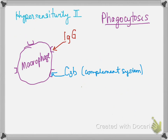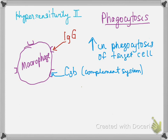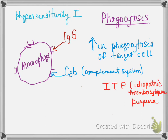With phagocytosis, macrophages have receptors on them, and both IgG and C3B are opsonins — meaning they enhance phagocytosis. IgG or C3B can bind to the receptor on the macrophage, thus enhancing phagocytosis of the target cell. An example of this would be ITP.